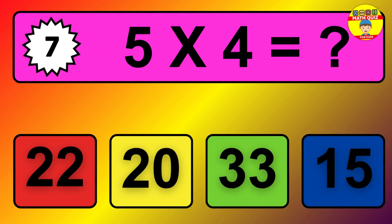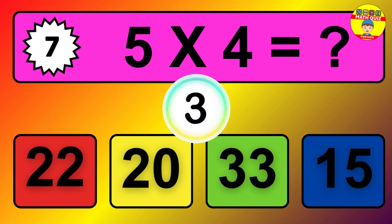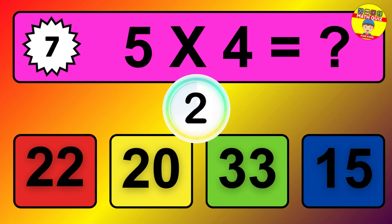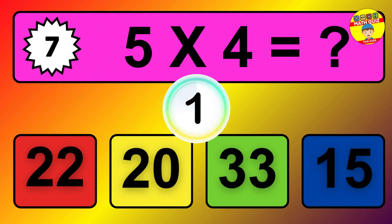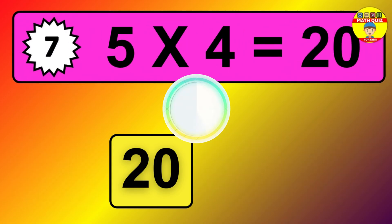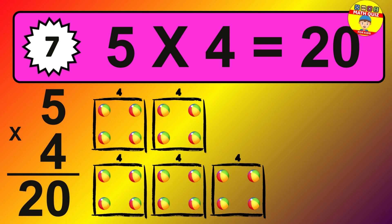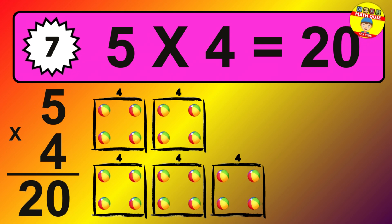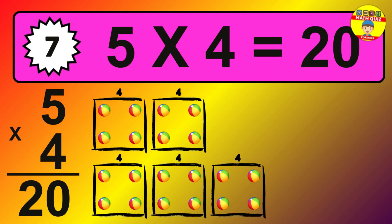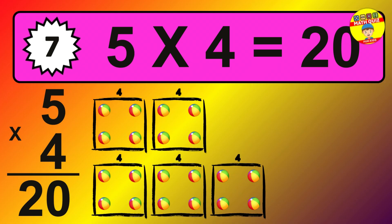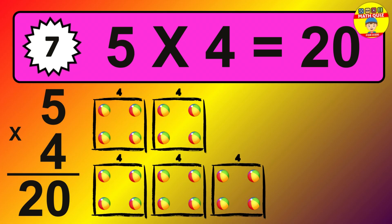Question 7. 5 times 4 equals what? The answer is 5 times 4 is 20. To calculate, we have 5 groups with 4 balls each one. So, how many balls do we have? 20 balls.